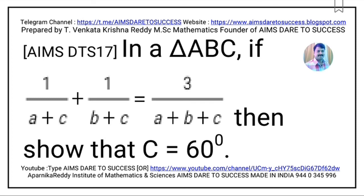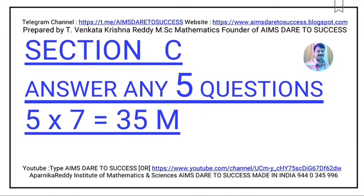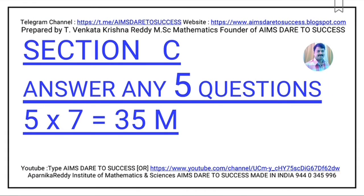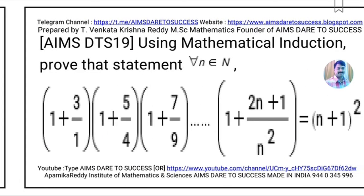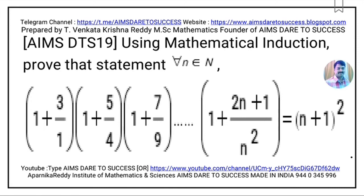Now moving to long answer questions — Section C. Answer any 5 questions out of 7; each question carries 7 marks, so 5 into 7 equals 35 marks. Question 18: If F is a mapping from A to B that is a bijection, and I_A and I_B are identity functions on A and B respectively, then show that F∘F⁻¹ = I_B and F⁻¹∘F = I_A. This question is from Functions.